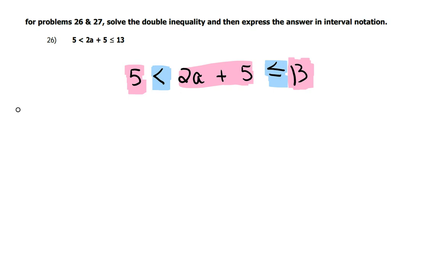So, I am going to start by subtracting the 5 from the middle to cancel it out, so that in the middle, I just have the 2A. But what you do in the middle, you also have to do to both ends. And 5 minus 5 is 0. There's my less than sign. Two A's in the middle. There's my less than or equal to. And 13 minus 5 is 8.